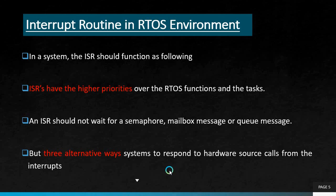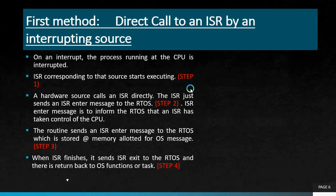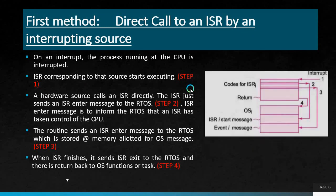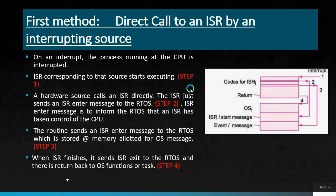These three methods are the important topics in this section. The first method is a direct call to an ISR by an interrupting source. When an interrupt occurs, the process running on the CPU is interrupted and the ISR corresponding to that source starts executing — this is shown in step 1.